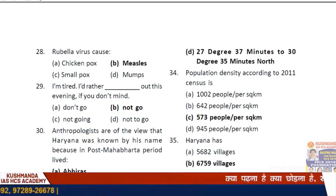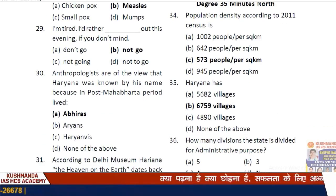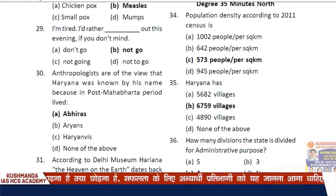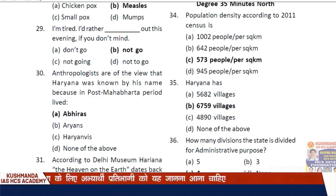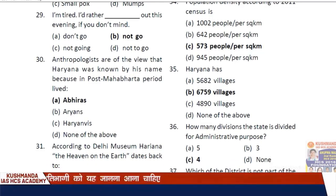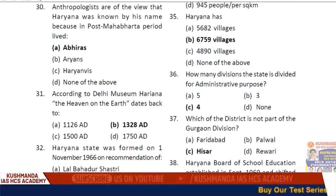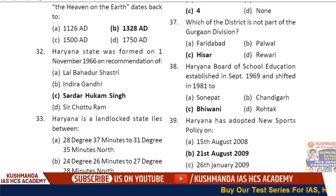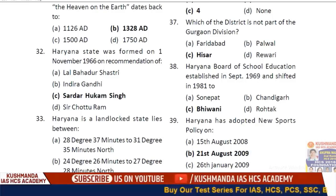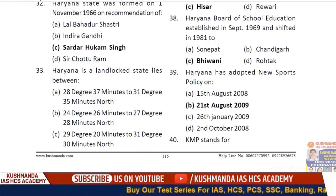The answer is option B. Anthropologists are of the view that Haryana was known by its name because in the post-Mahabharata period, the Abhirs lived there. According to the Delhi Museum, Haryana — the heaven of earth — dates back to 1328. Haryana state was formed on 1st November 1966 on the recommendation of Sardar Hukum Singh.